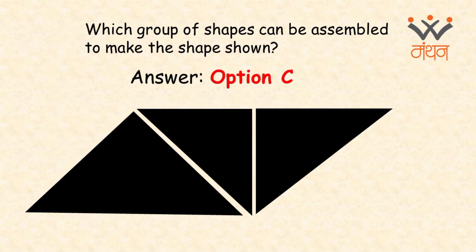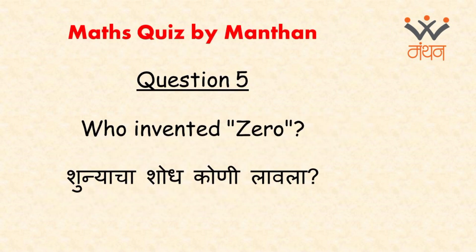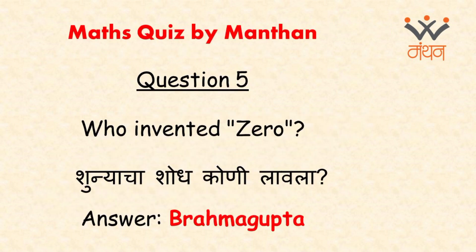Some facts we should know as Indians, and question number 5 is about that. The question is: who invented zero? The answer is Brahma Gupta. Brahma Gupta was an Indian mathematician and astronomer, and his understanding and study of the zero digit was praised all over the world.